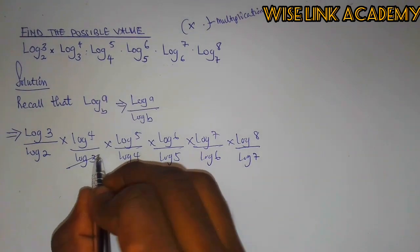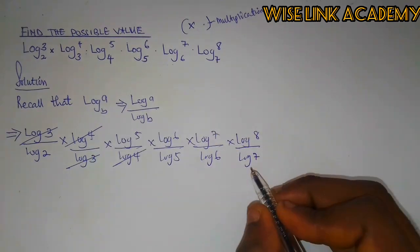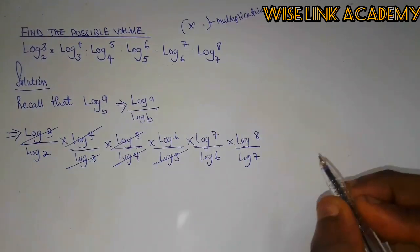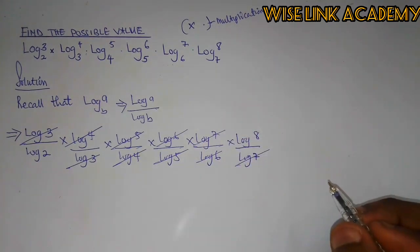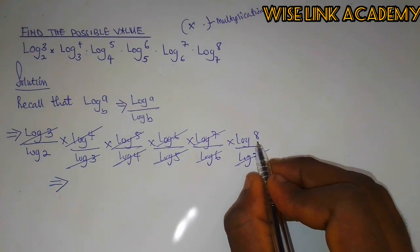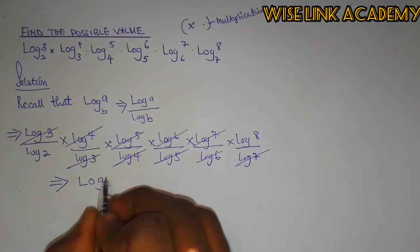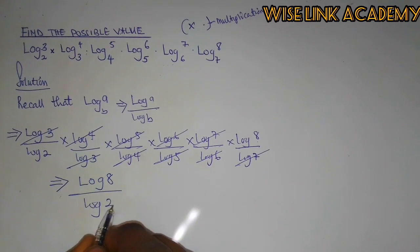So this can cut out this. This can cut out this. This can eliminate this. So finally, I'll be having log 8 is what is remaining as the numerator and log 2 is what is remaining.